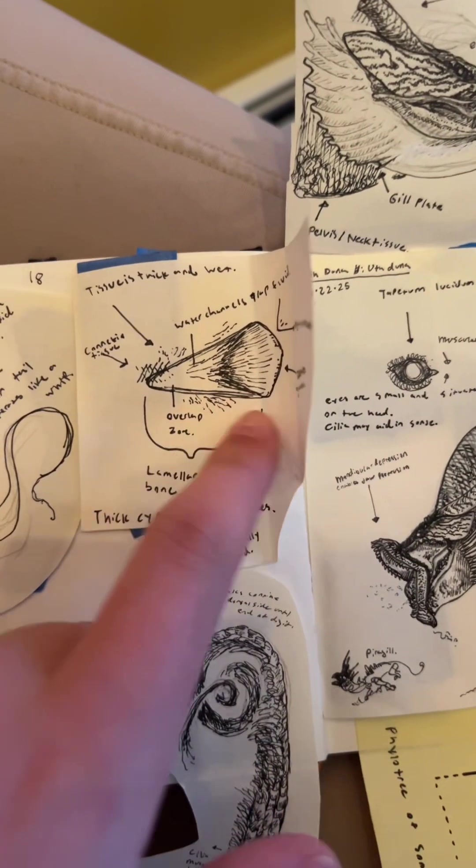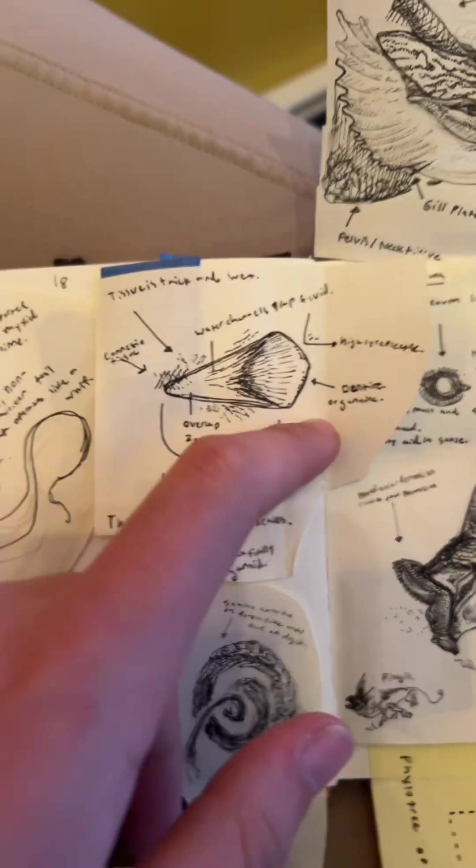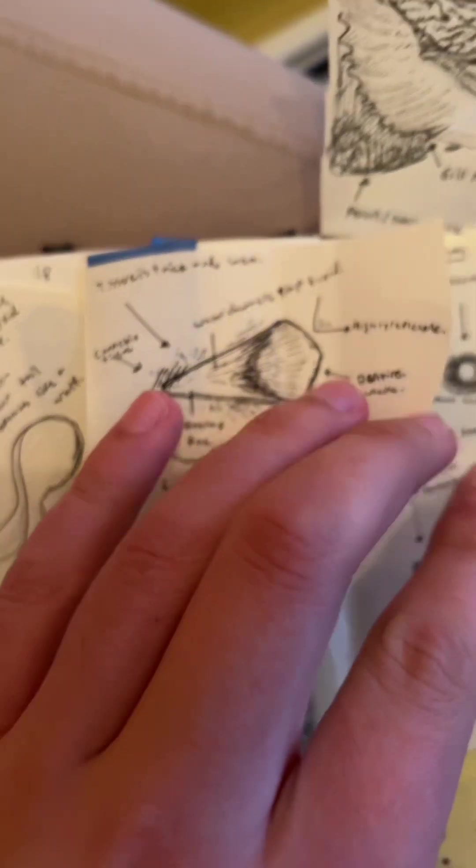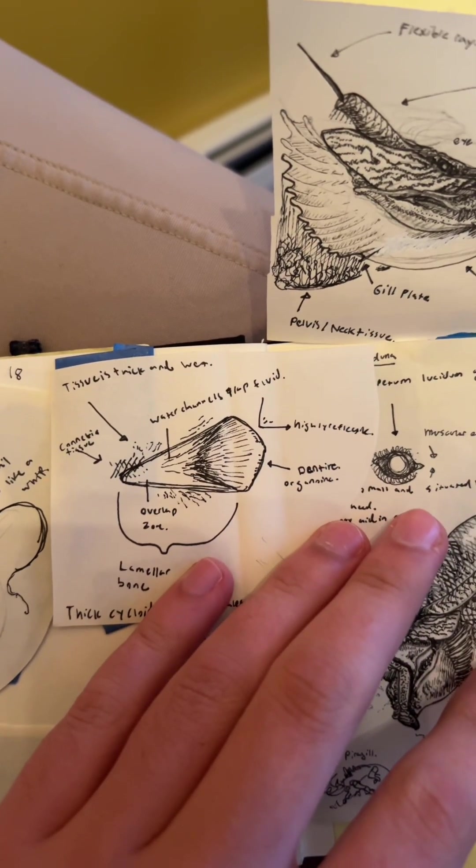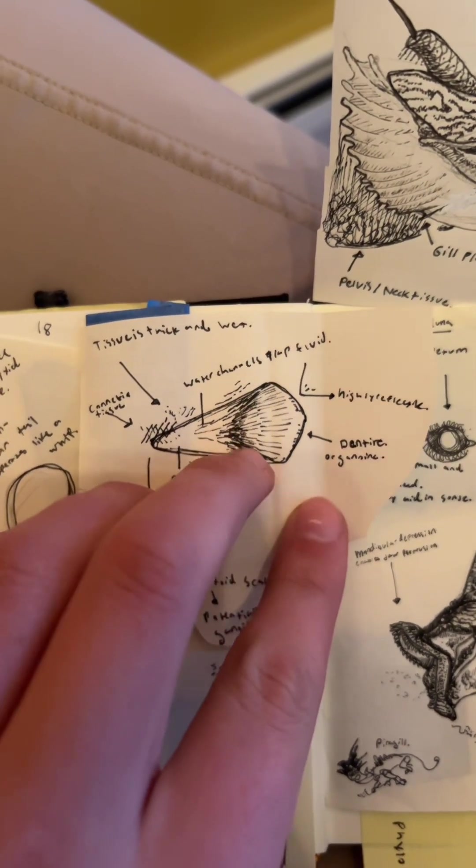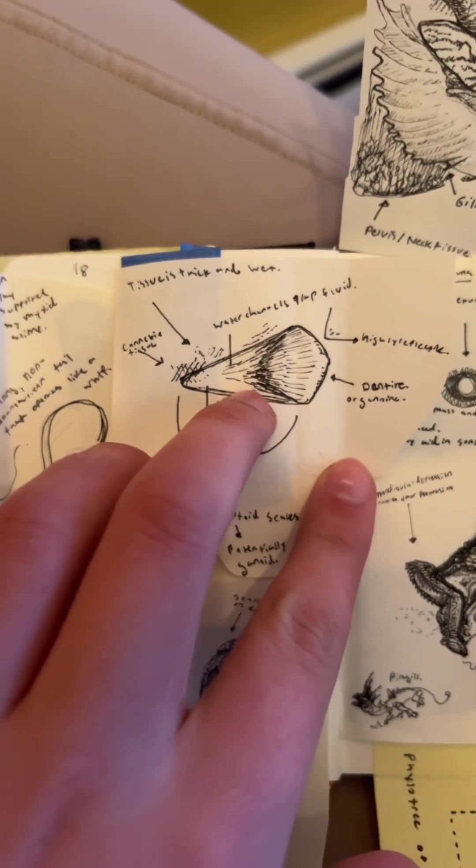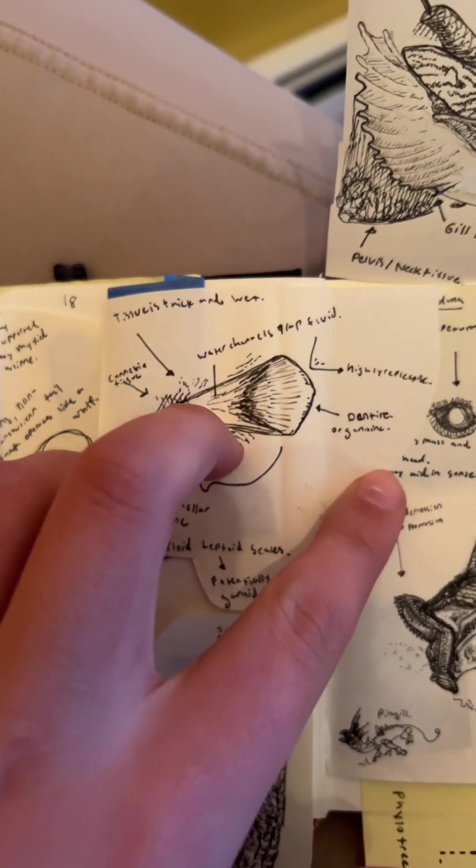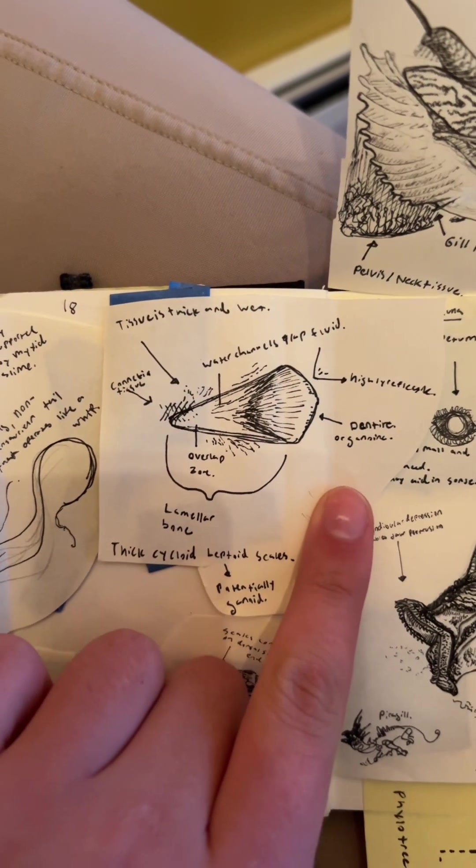In terms of its anatomy, the scales are super cool. A lot of this is extrapolated because the scales are very similar to those of the pirarucu. And so I've reconstructed them with the part you can see here being drawn from the game's morphology, and this bony plate here being inferred from similar morphology in pirarucu scales.